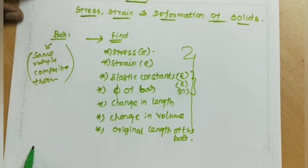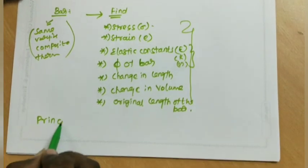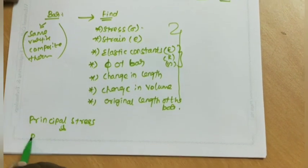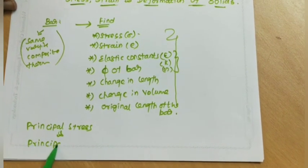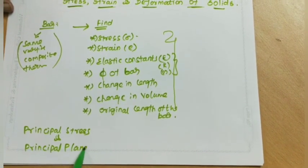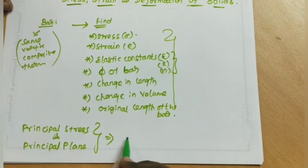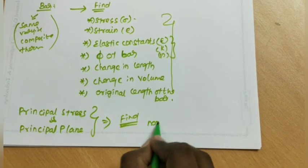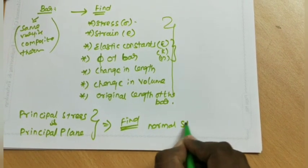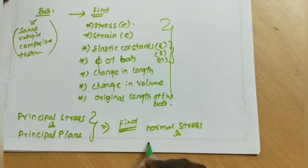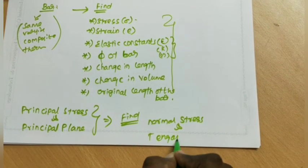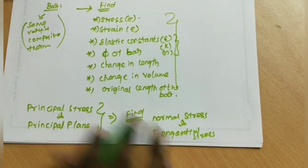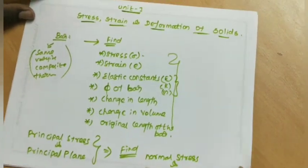For a bar, what we need to do is find Principal Stresses and Principal Planes. We find the normal stresses and tangential stresses.